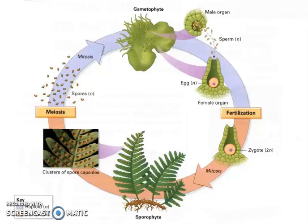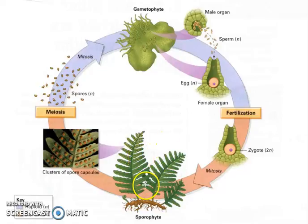Hello. Today I'd like to go over the basic life cycle of the pteridophytes. Pteridophytes would be things like the ferns. Normally, whenever you see a fern, it is in this sporophyte stage, and the sporophyte stage is a typical fern.